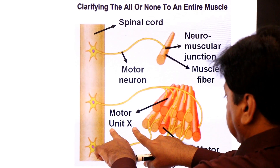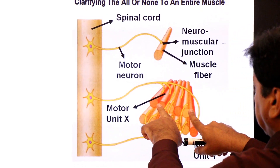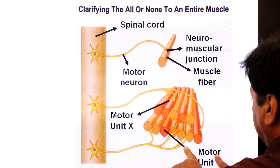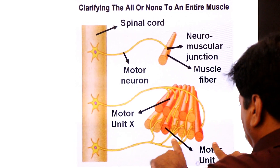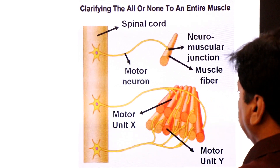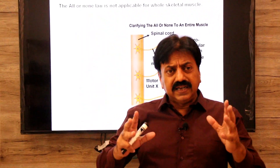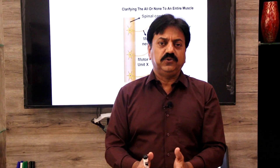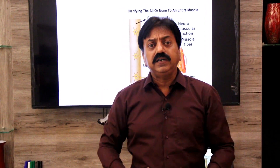If motor unit X fires, the fibers connected to motor unit X will contract, not the fibers of motor unit Y. And when motor unit Y fires, only the fibers connected to motor unit Y will contract, not the fibers of X. So here we have multiple motor units. The muscle is made up of multiple motor units — one skeletal muscle is made up of multiple motor units.